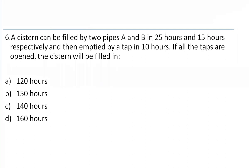A cistern can be filled by two pipes A and B in 25 hours and 15 hours respectively, and then emptied by a tap in 10 hours. If all the taps are open, the cistern will be filled in how many hours? Pipes A and B are filling pipes, and the tap that empties in 10 hours is a negative pipe.